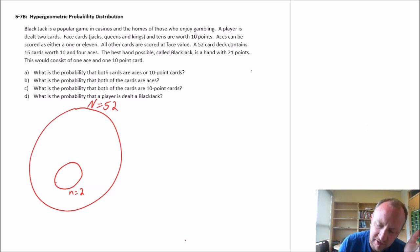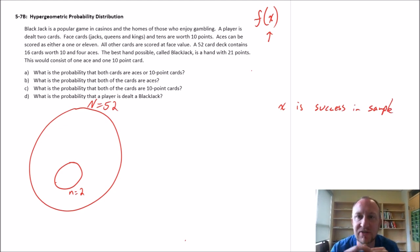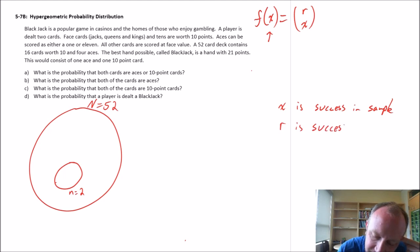Let's start with the formula. This is the probability of X successes. So let's define our terms here. X is the number of successes in the sample. This f of X gives us the probability of achieving X number of successes in a sample. This is R over X, where R is the number of success in the population. And then this is the number of failures, N minus R and little n minus X. N is population size. Little n is the sample size.